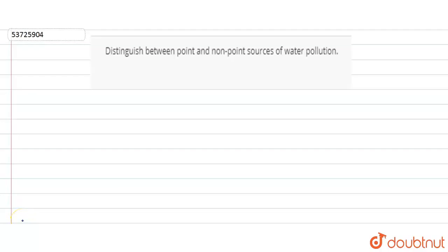Hello everyone, our today's question is: Distinguish between point and non-point sources of water pollution. We need to tell what are the point and non-point sources of water pollution. When it is water quality, it can be affected by pollution from point sources as well as from non-point sources.